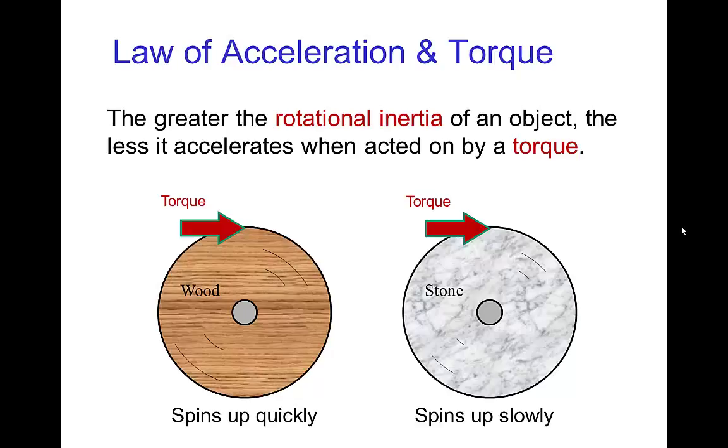Now the amount of acceleration that we get for a given torque depends on what's called the rotational inertia of an object. So something which has less rotational inertia will spin up quickly compared to something else that has more rotational inertia. For the same torque, it spins up more slowly.